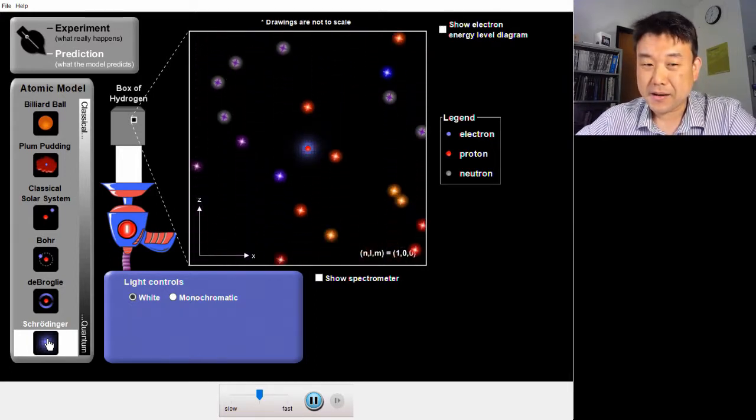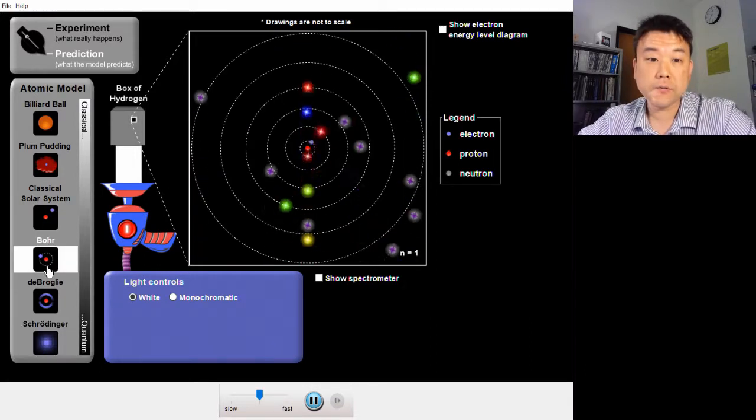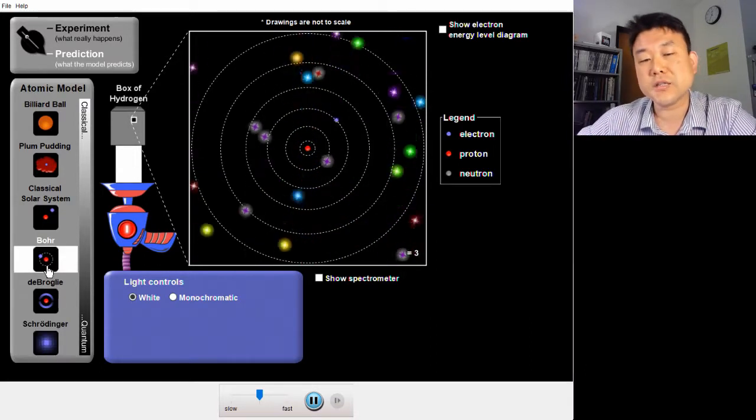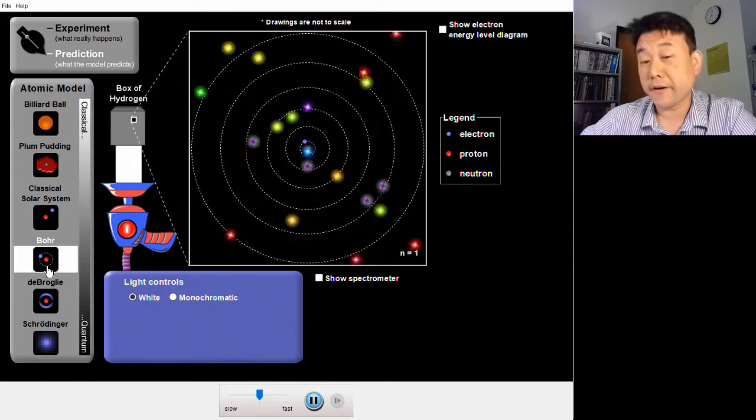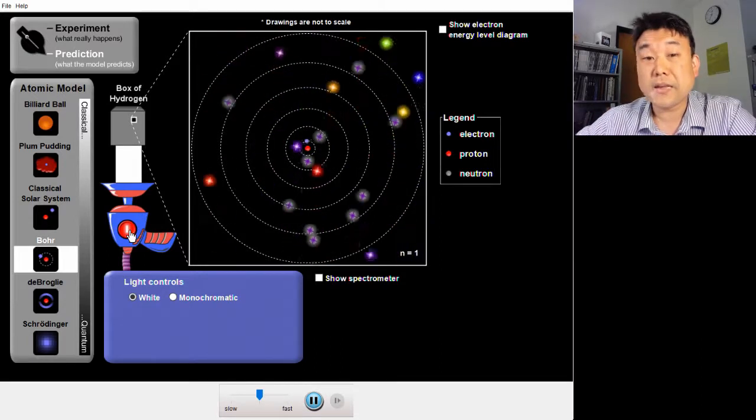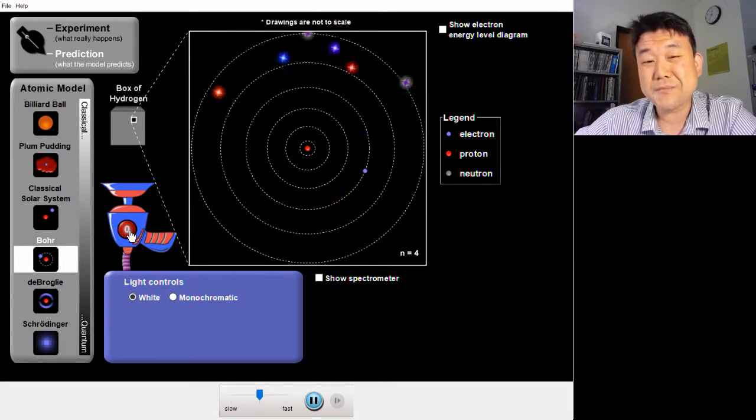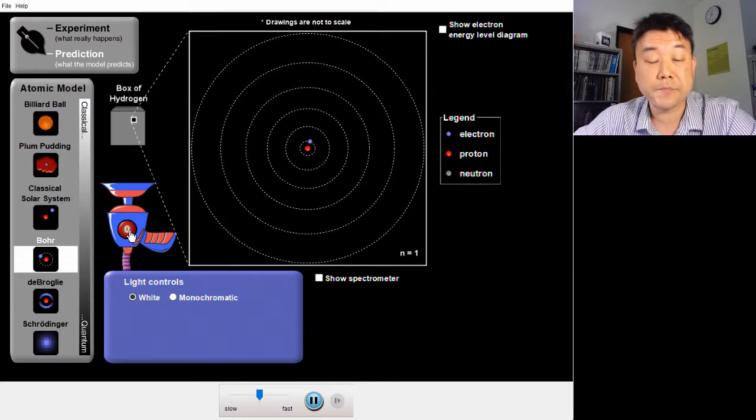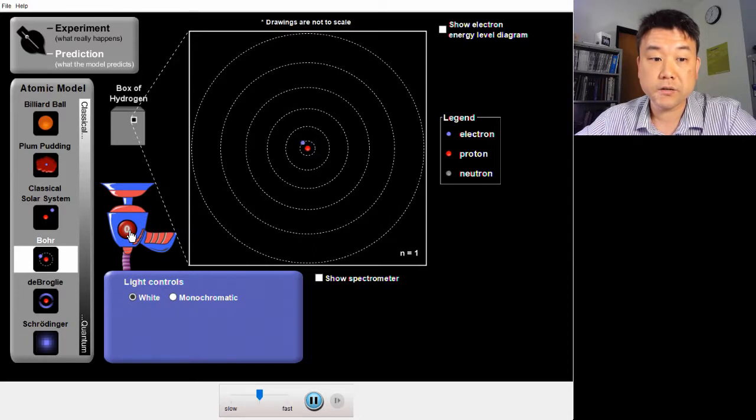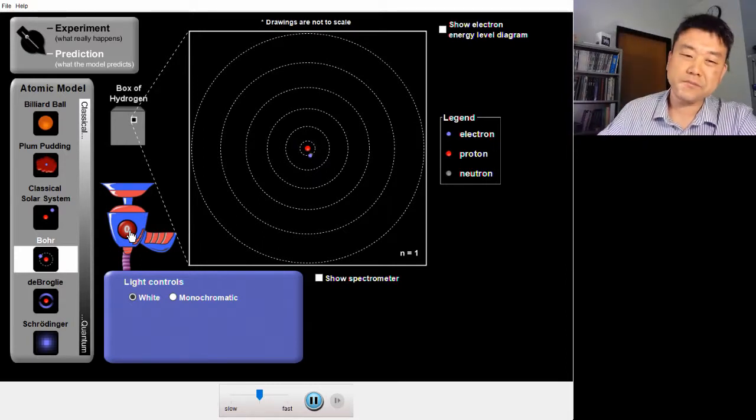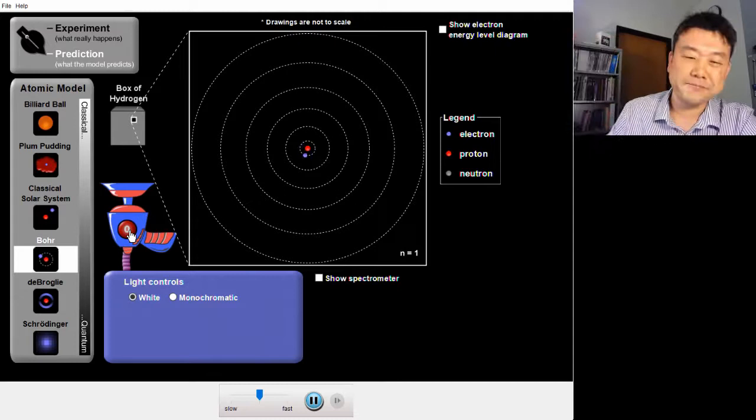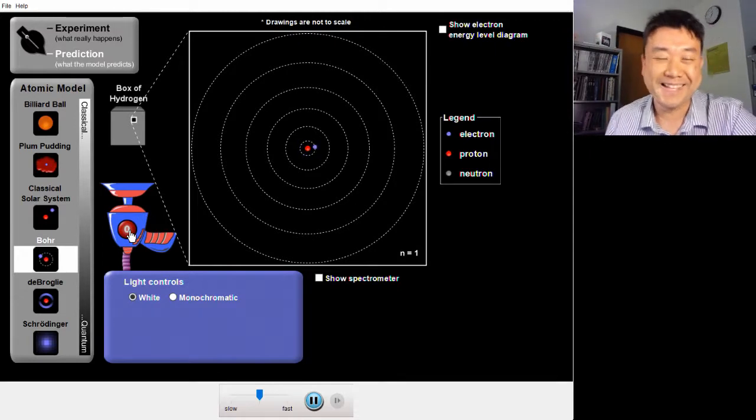So I hope this example of atomic model made the distinction between models, theories, and laws clear. These are words that even we scientists sometimes use sloppily interchangeably. But there are times when it is important to draw this distinction. For example, to dismiss a new idea that you don't like, you shouldn't really say, that's just a theory. You should instead say, that's just a model. Well, or not. Bye.